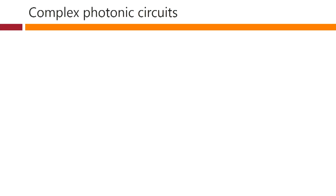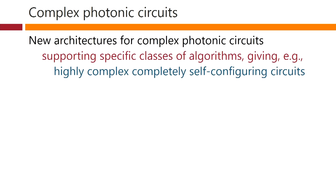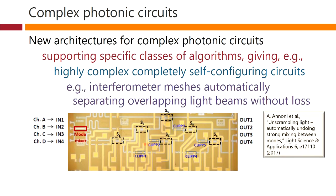Especially over the last decade or so, we've started to see quite complex photonic circuits. And these circuits have architectures to them that are also complex, and those architectures can support specific classes of algorithms, giving, for example, highly complex, completely self-configuring circuits. Here is one such circuit — an interferometer mesh that automatically separates overlapping light beams without loss. The overlapping light beams come from some fibers, coupled into waveguides, all mixed up in a particular region, and then this mesh of interferometers separates them all out again automatically. This is introducing new ideas of architectures and algorithms in complex circuits.